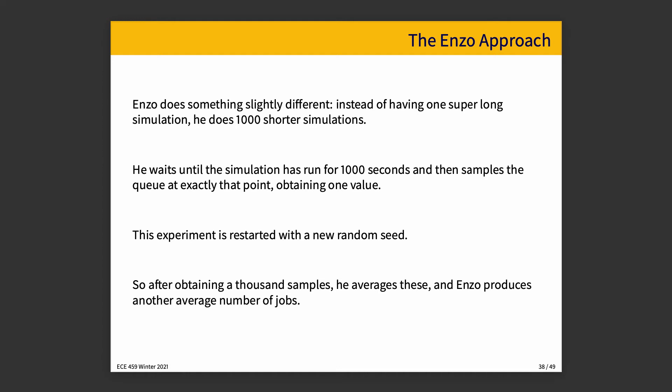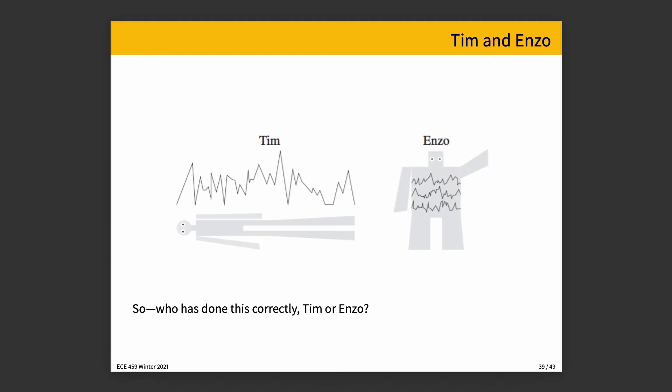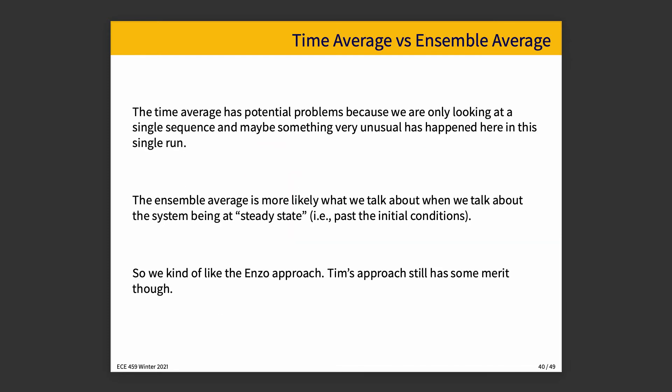Considering both of these strategies — who did it correctly? The time average has some potential problems in that we're looking only at a single sequence, and maybe this is just very unlucky. The initial conditions that we chose might have been the worst or the best possible, and we end up with an unrepresentative outcome. The ensemble average is probably more like what we talk about when we think about a system being at steady state, past the initial conditions. We like the Enzo approach, and also it makes it easier to do a parallel approach — you can run several simulations concurrently. Tim's approach still has some merit though; it's not necessarily terrible.